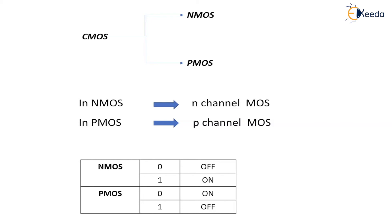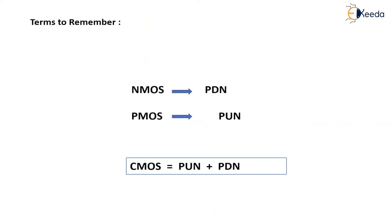The next important terms in this unit: CMOS equals PUN and PDN. I already said CMOS is made up of NMOS and PMOS. Now I am saying that CMOS is nothing but a collection of a pull-up network (PUN) and a pull-down network (PDN).